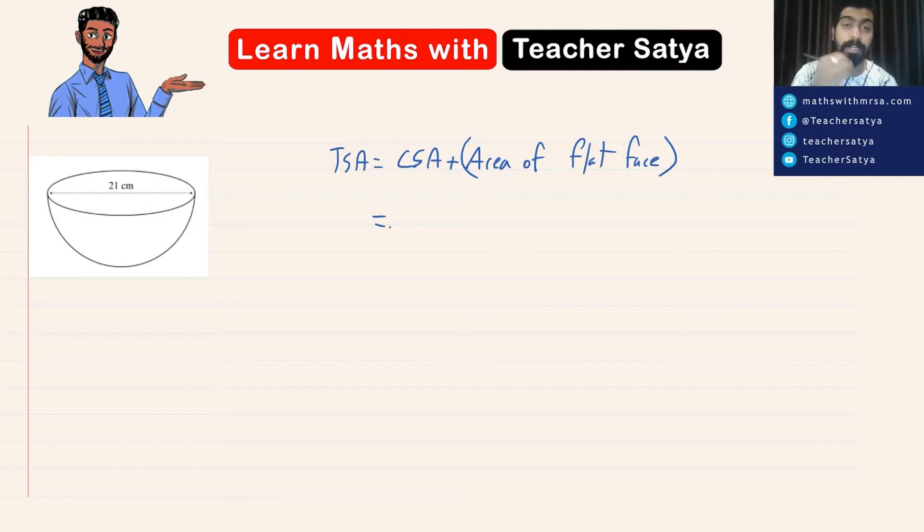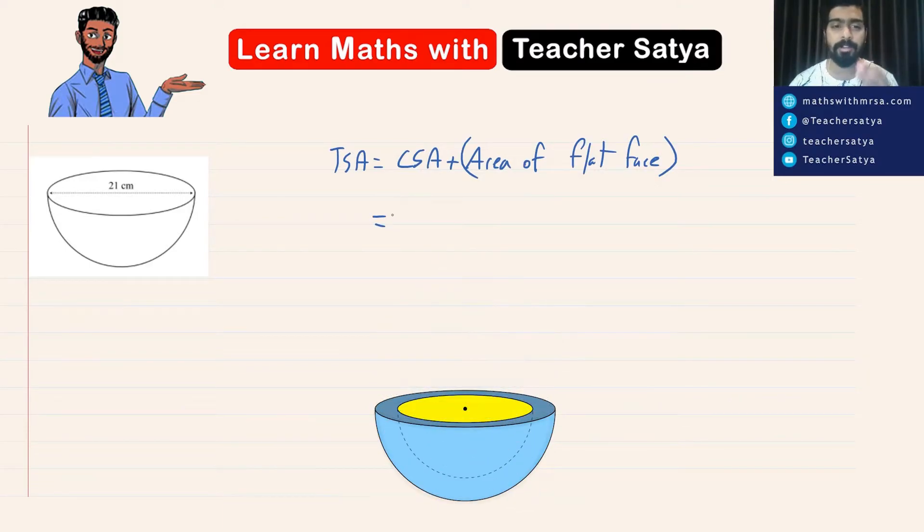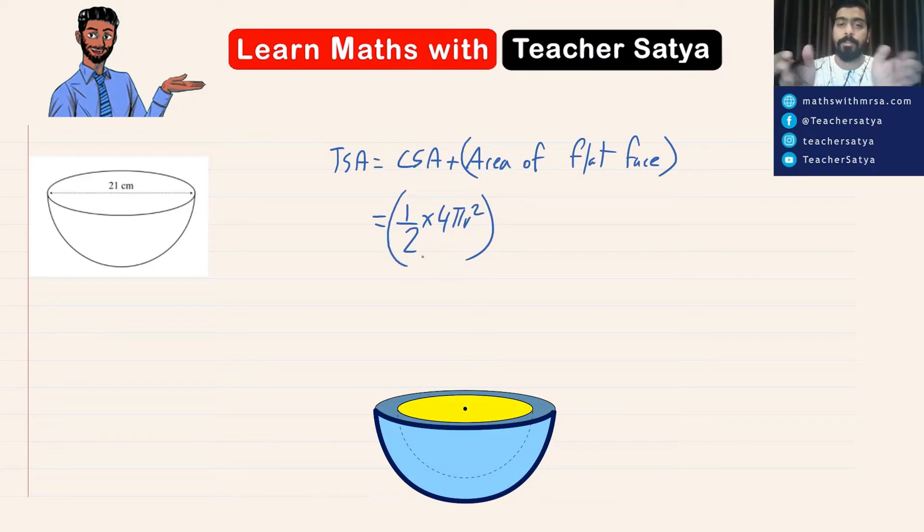Now, if you watched my previous video on how to find the total surface area of a sphere, we would know that in this one, since it is a hemisphere, the curved surface area would be one half multiplied by four pi r squared. Right guys? So this one would be equal to the curved surface area.